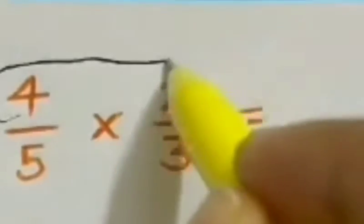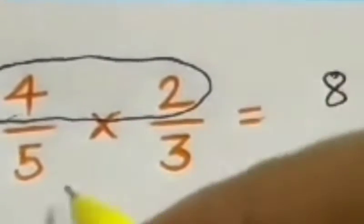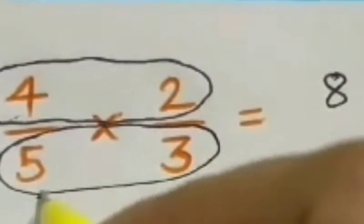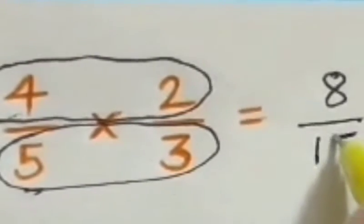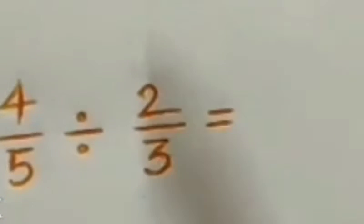Four times two equals eight. And then five times three equals fifteen. So eight to the fraction of fifteen is the answer. We have to move forward to our second one.